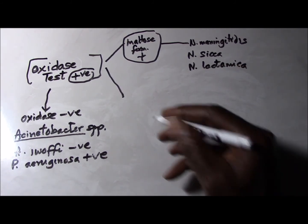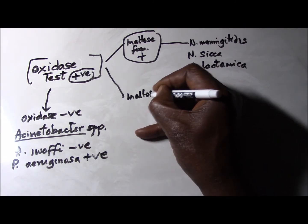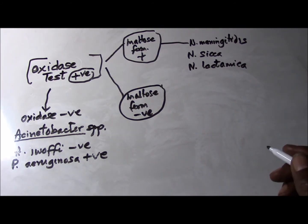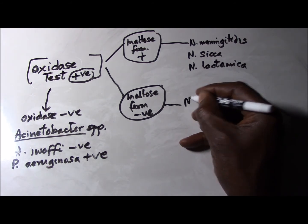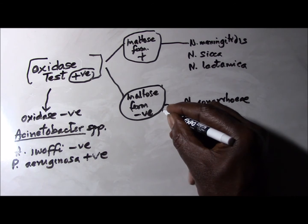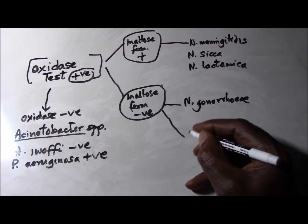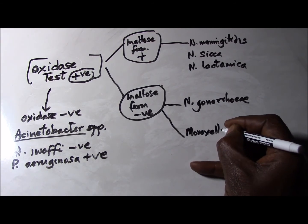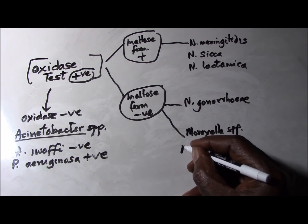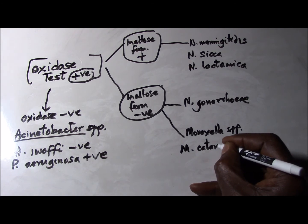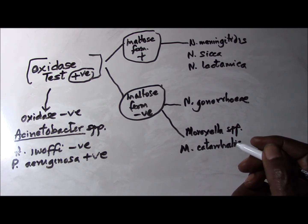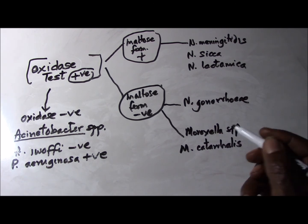If on the other hand maltose fermentation is negative, then we know we could be dealing with Neisseria gonorrhoeae, or even with an entirely different organism — a Moraxella species, in particular Moraxella catarrhalis. It was previously known as Branhamella catarrhalis, but Moraxella catarrhalis is the more modern name.